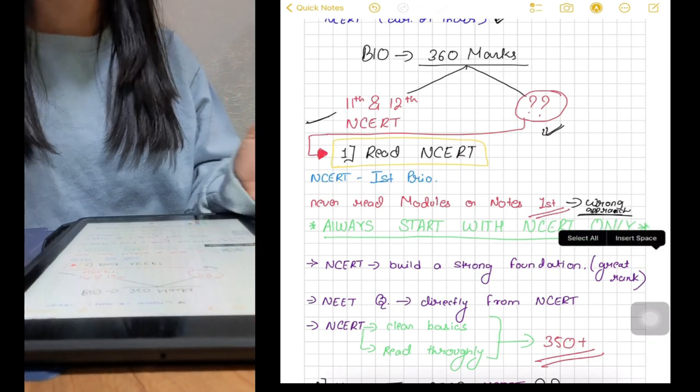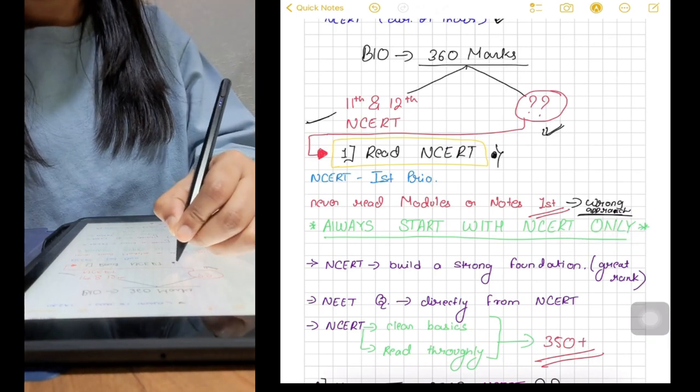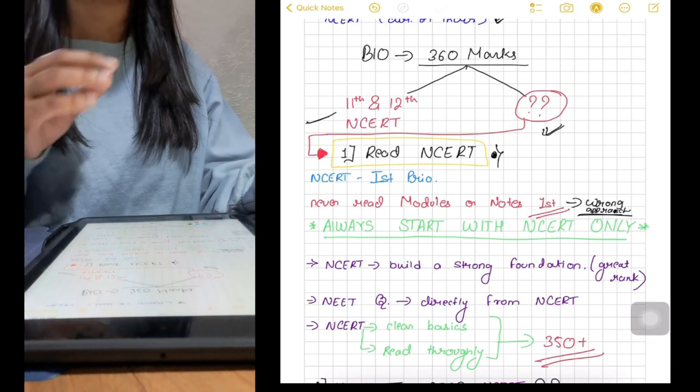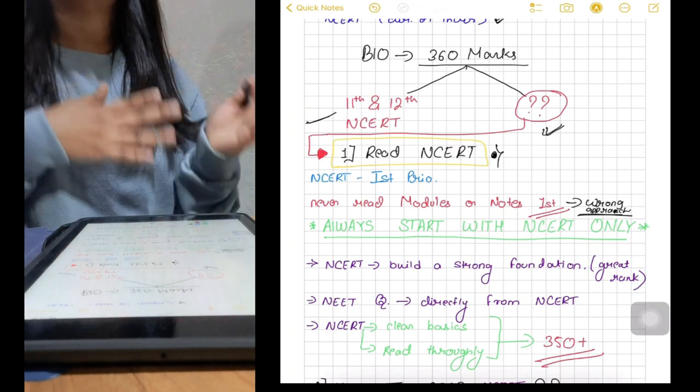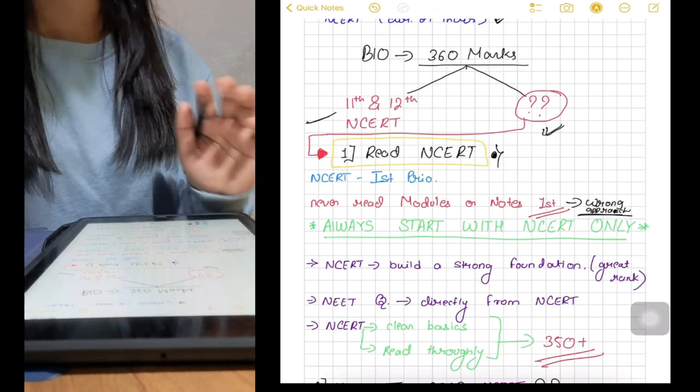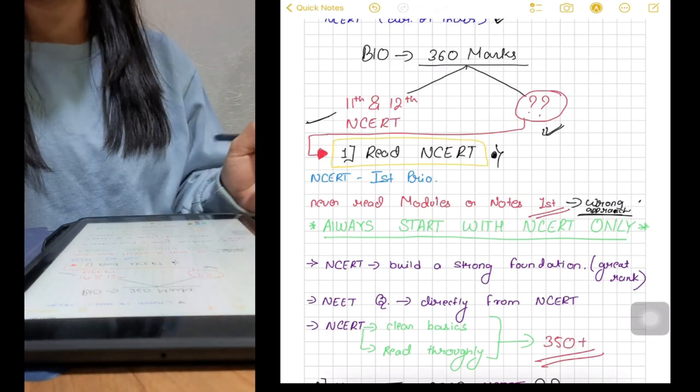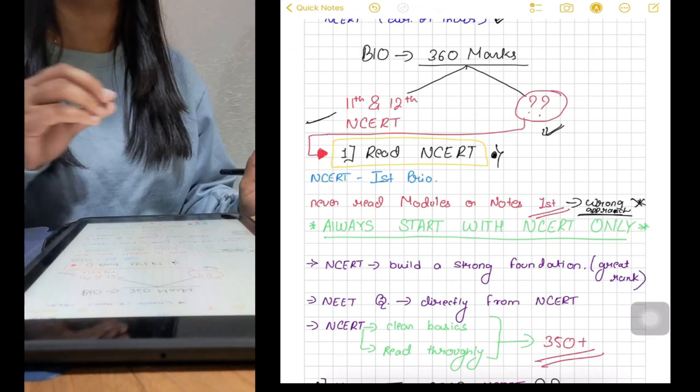The first thing is read NCRT. This is the most important thing. If you have something in your mind like you'll read NCRT afterwards, first you'll read your coaching modules, then some topper's notes and then at the end you'll read your NCRT, this is not going to work. This is a wrong approach because NCRT will help you to build a strong foundation for scoring a great rank.